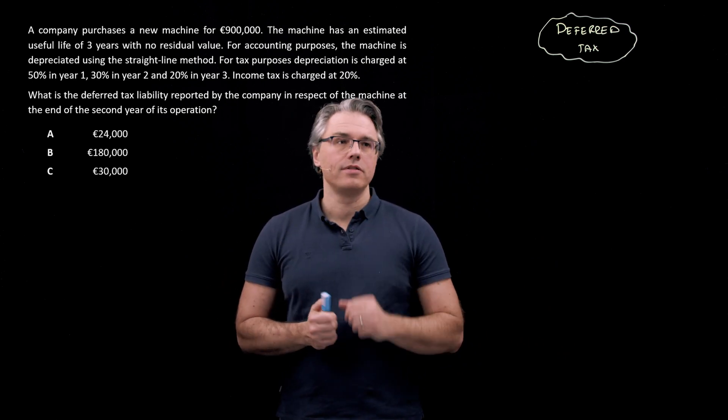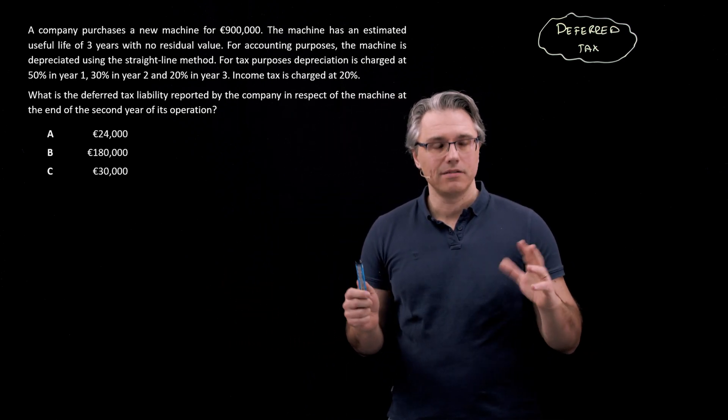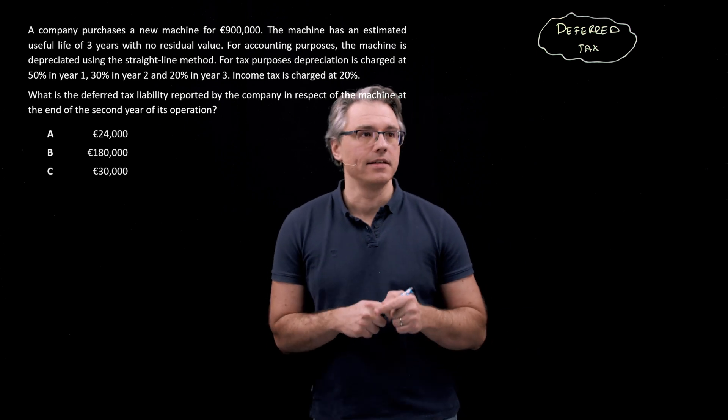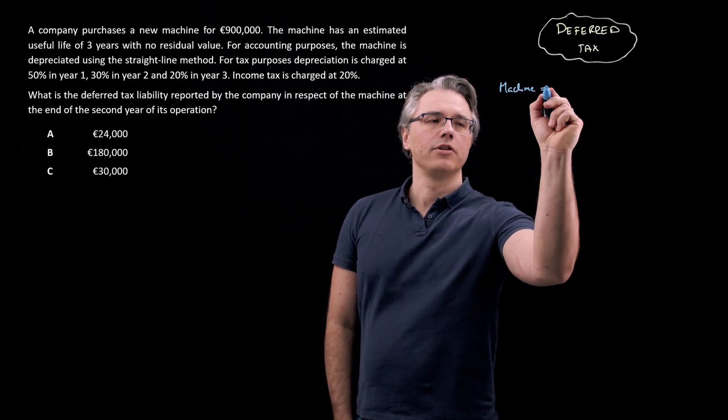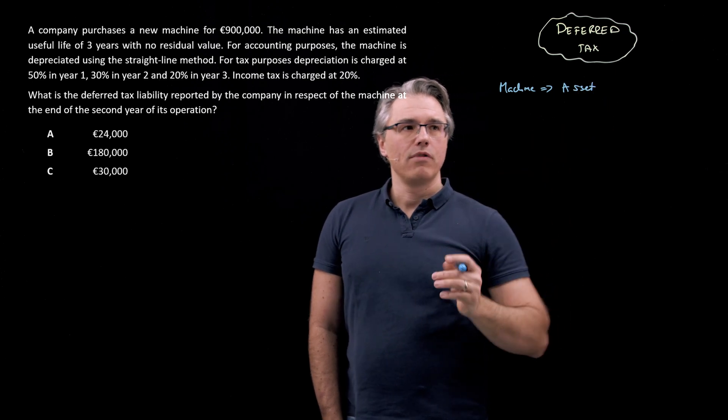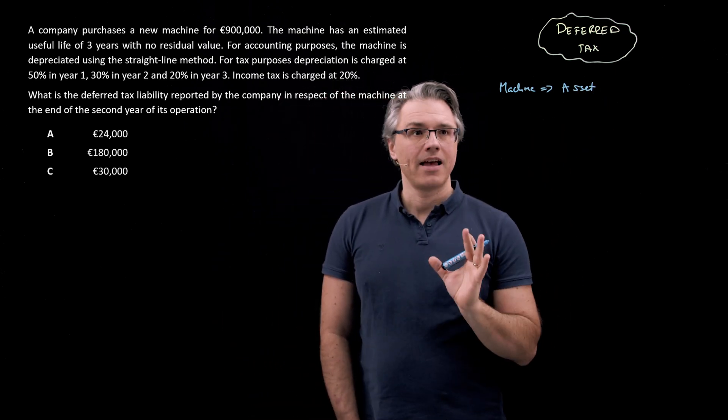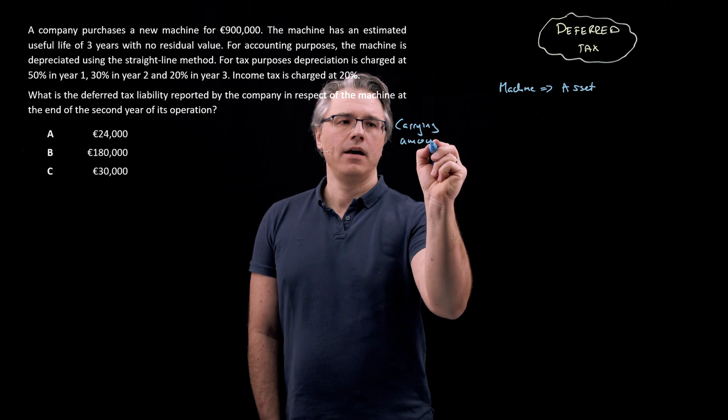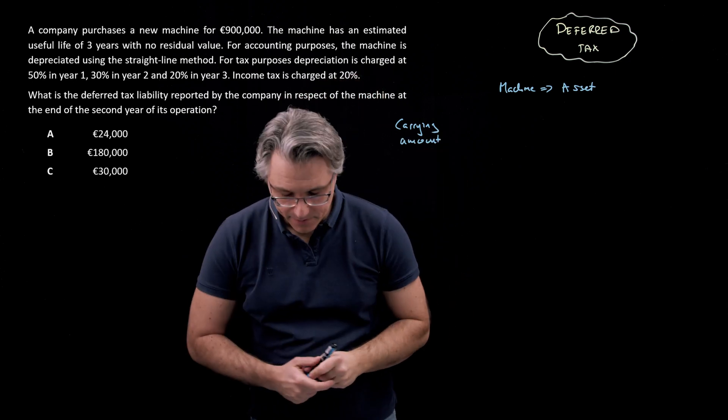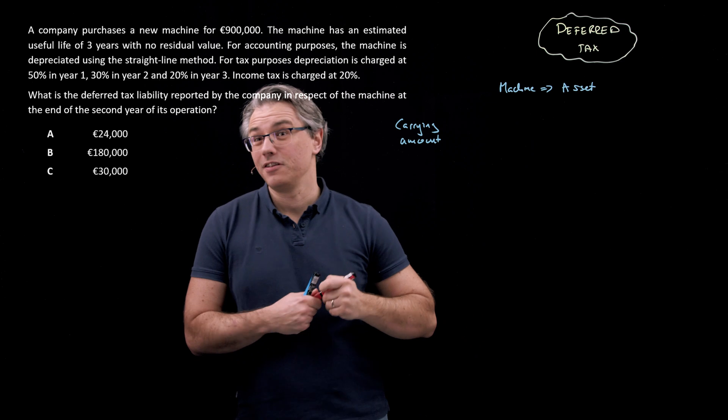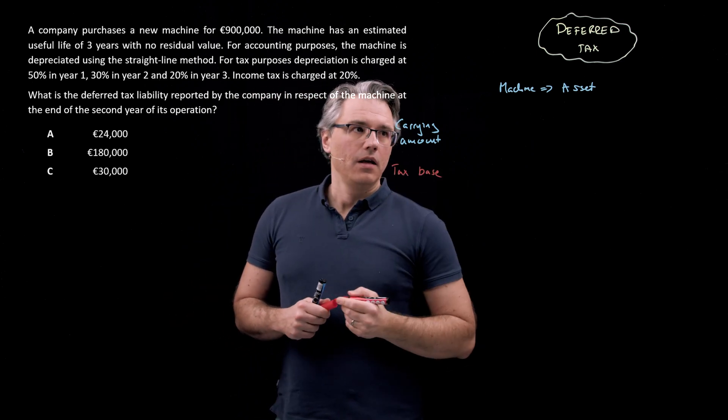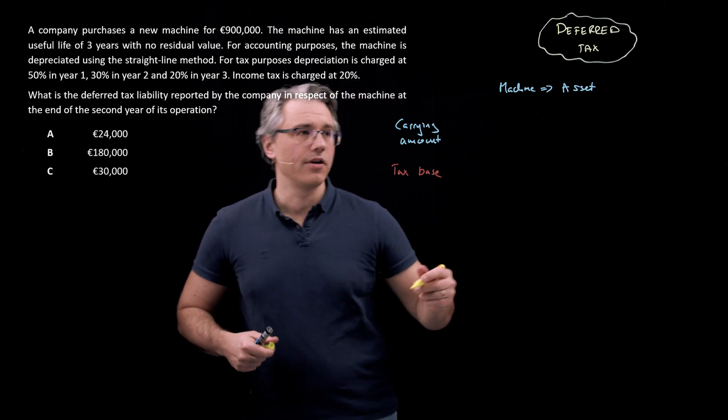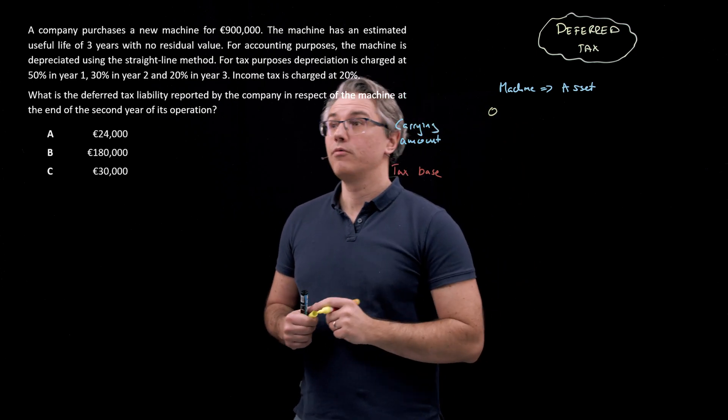So let's approach this question by creating a little table where for the item of property, plant and equipment, the machine, which is obviously an asset, let me write this down, machine, an asset in the balance sheet, we're going to contrast two things: its carrying amount and naturally also its tax base. So its value from a tax perspective.